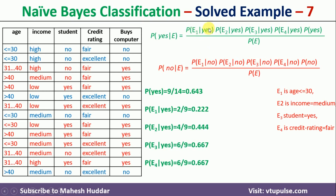Now we calculate the conditional probabilities with respect to the yes class. P(E1|yes): E1 is age ≤ 30. Counting only the red (yes) examples, there are two instances where age ≤ 30. So P(E1|yes) = 2/9 ≈ 0.222.